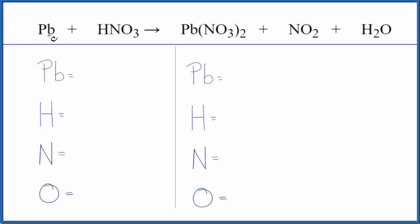In this video, we'll balance the equation for Pb plus HNO3, and this is dilute HNO3, lead plus nitric acid.